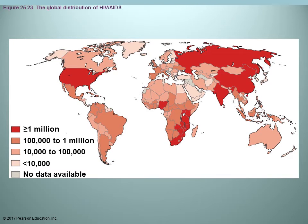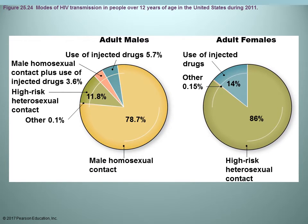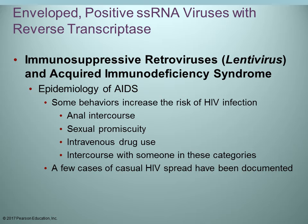The global distribution of HIV and AIDS is definitely global now. In a 2011 US study, for adult males the majority of transmission was through male homosexual contact, while for females it was usually heterosexual contact. Behaviors that increase HIV infection risk include anal intercourse, sexual promiscuity, IV drug use, or having intercourse with someone in any of those categories.